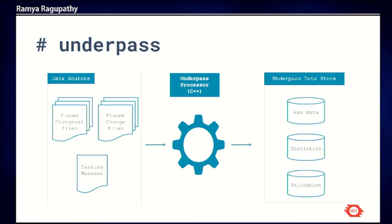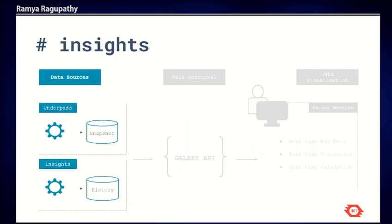Tasking Manager is also included as a data source because Galaxy's focus is to ingest different data into one place. So not just the minutely changes going into the OSM database, but also statistics from Tasking Manager specific to mapathons — like the time a user spent mapping different projects and the number of tasks or projects they contributed to — for a consolidated report at the end of a mapathon.